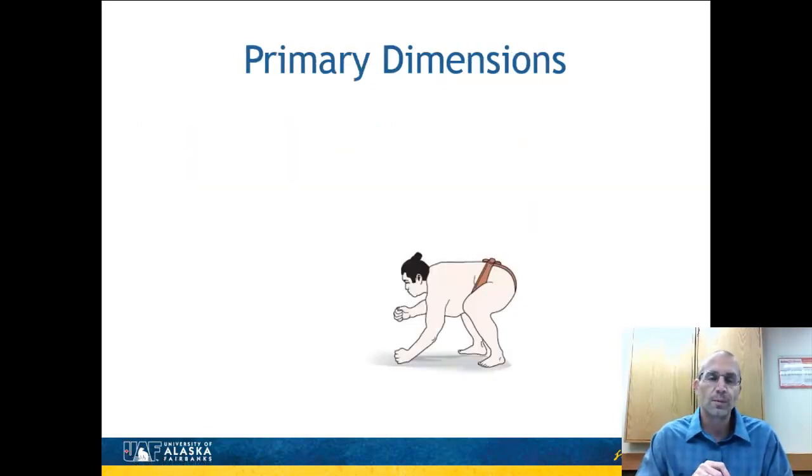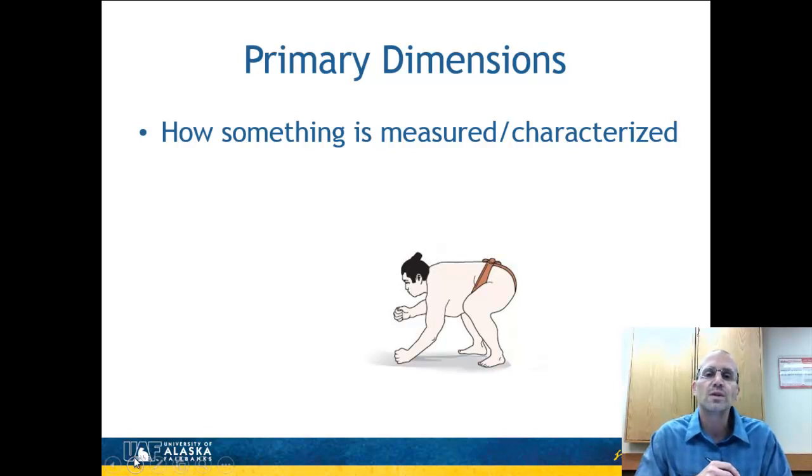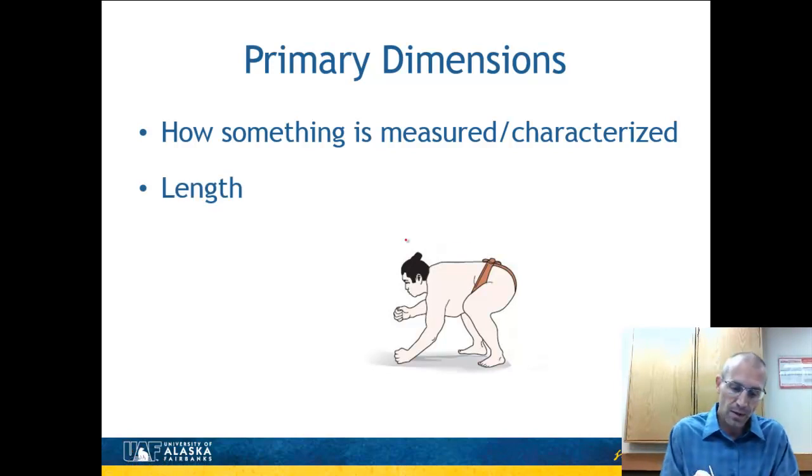So first, let's determine the difference between dimensions and units. When we talk about dimensions, what those are is how something is measured or how it is characterized. For example, let's look at this picture here where we have a sumo wrestler and think of various attributes of this sumo wrestler. Well, he has a length, and so that would be a dimension. Call that L for length.